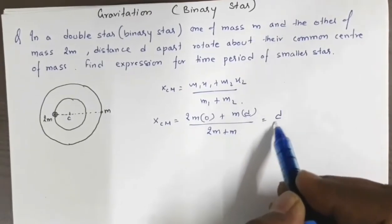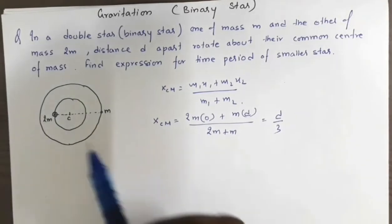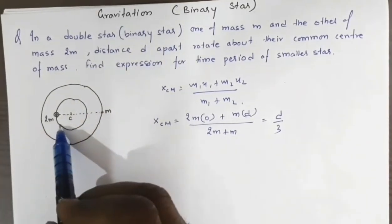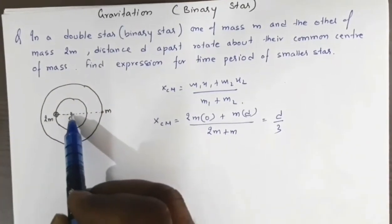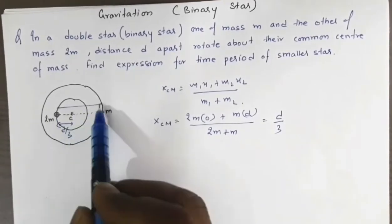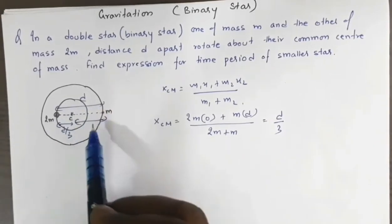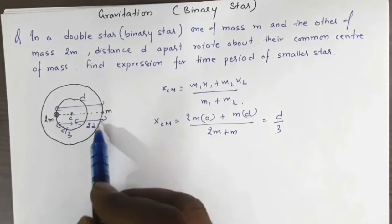So this distance to the center of mass is d/3. Since the total separation between the two masses is d, the other distance is 2d/3.